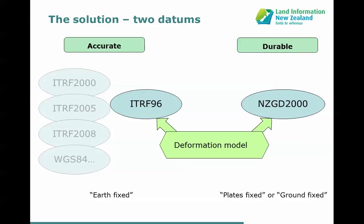The solution is straightforward: we have two datums. Although we call it New Zealand Geodetic Datum 2000, it's actually comprised of two main components. One is the reference coordinates that fix it to the ground, and the other is the deformation model. By combining those two, we effectively give ourselves access to two datums. The deformation model relates coordinate systems that are fixed in terms of the Earth — coordinate systems you can measure with GPS or GNSS systems, where we're saying what is my physical location relative to the centre of the Earth in an XYZ direction.